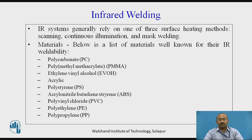In scanning, the parts to be joined are exposed to the infrared source for a very few seconds. Continuous illumination uses more exposure time. In mask welding, the IR source flows from one end to the other, while in continuous illumination the parts are exposed continuously to the IR source. In mask welding, the portion to be welded is exposed, while the unexposed portion is masked so it is not subjected to the IR source.